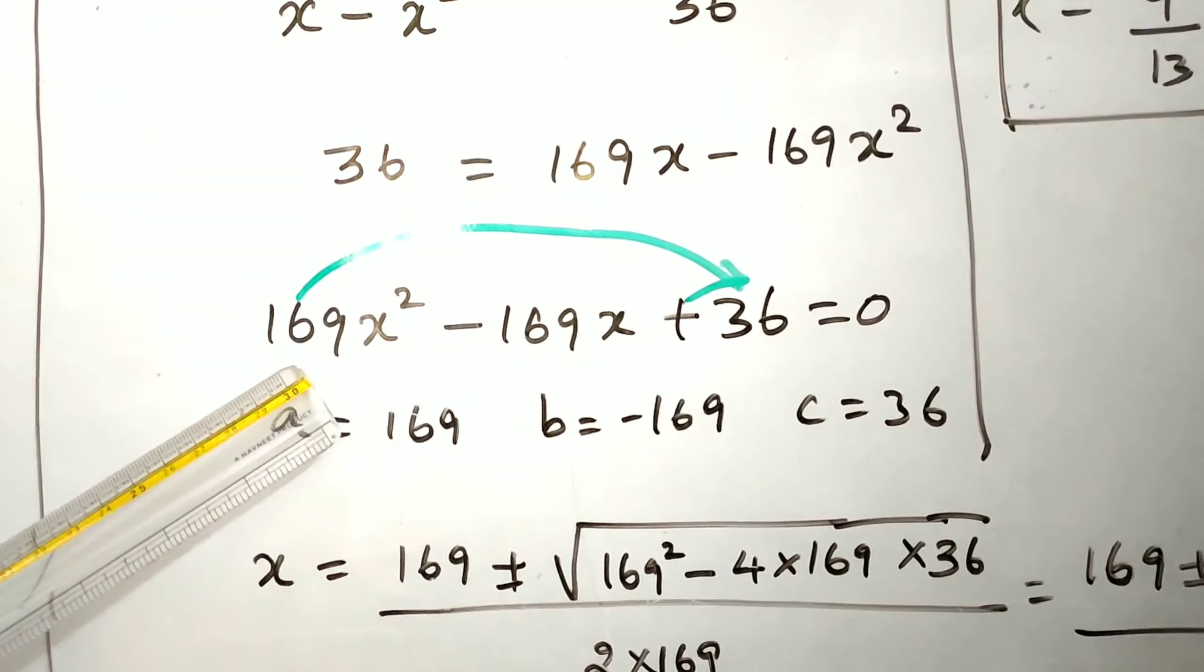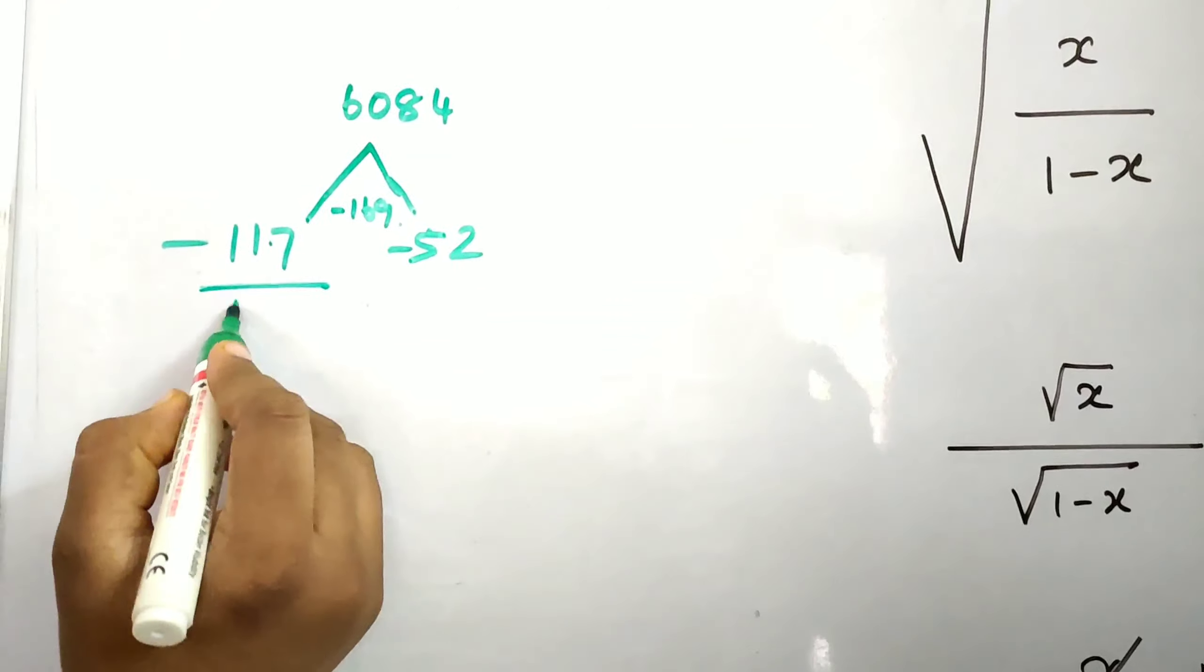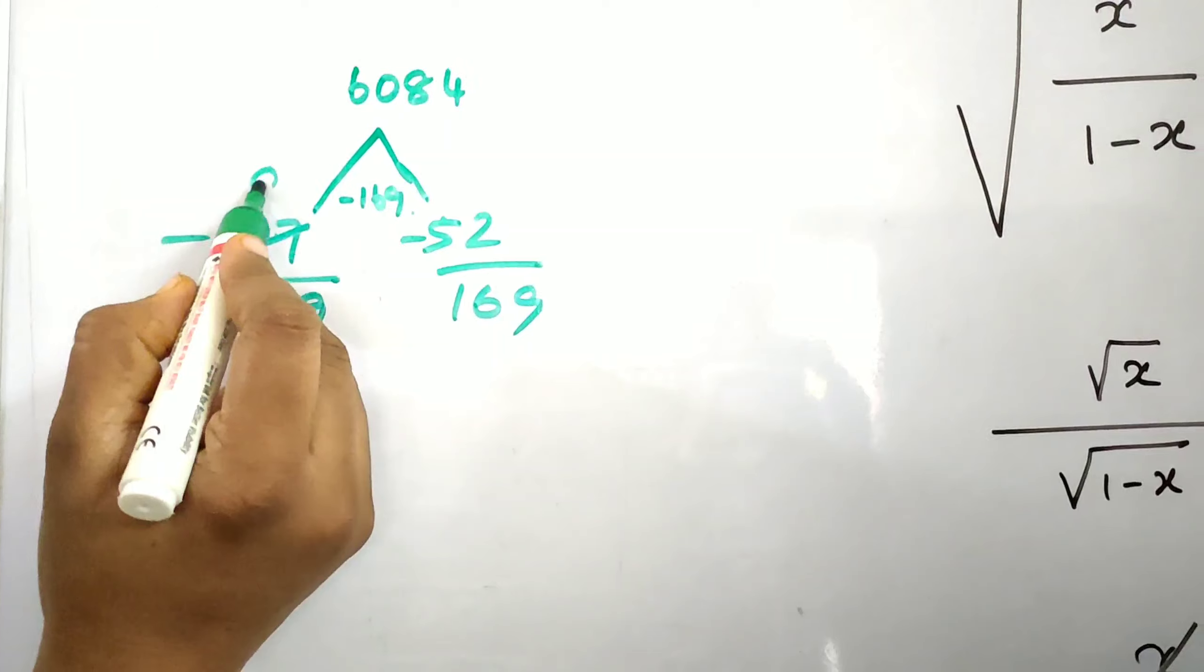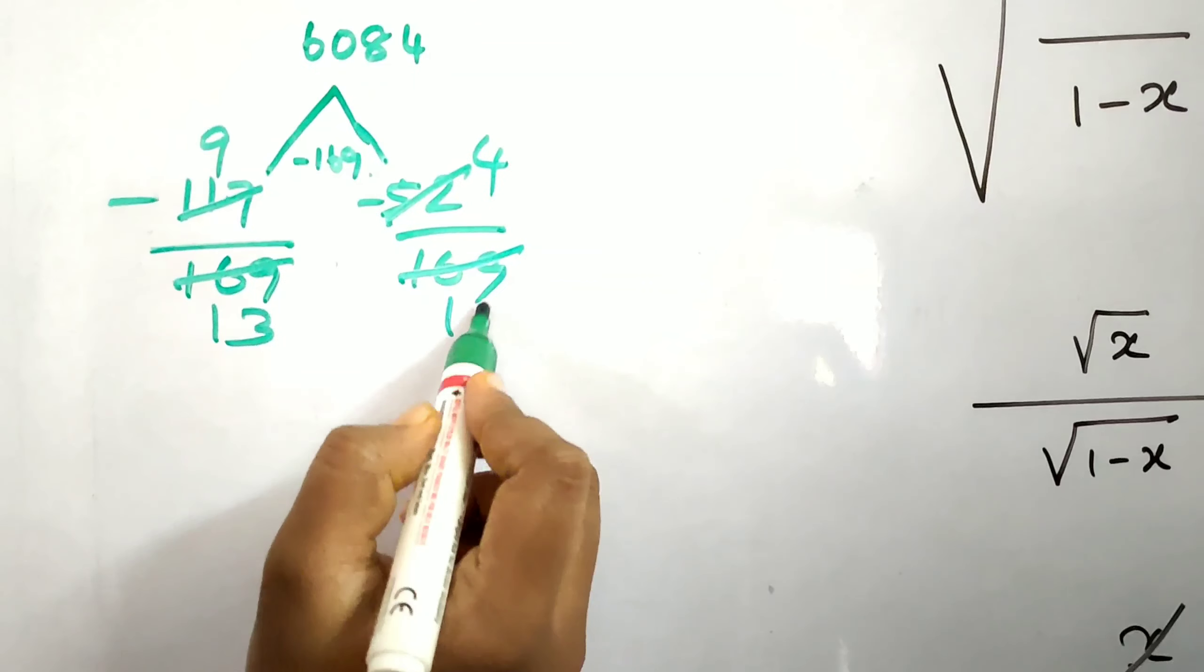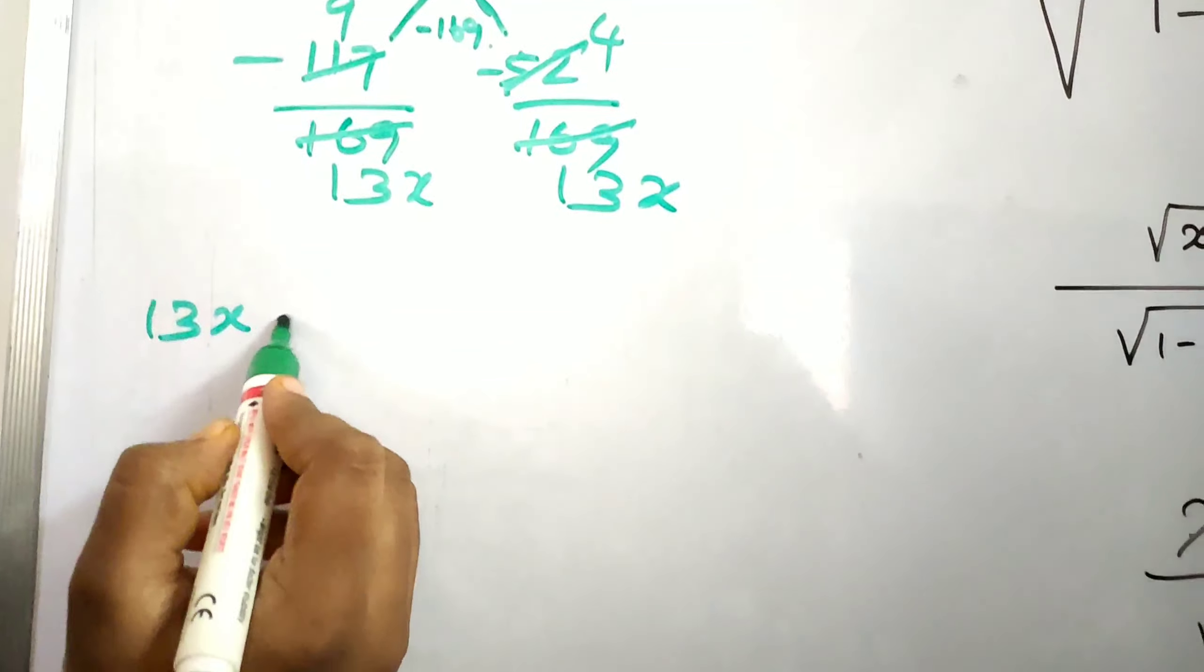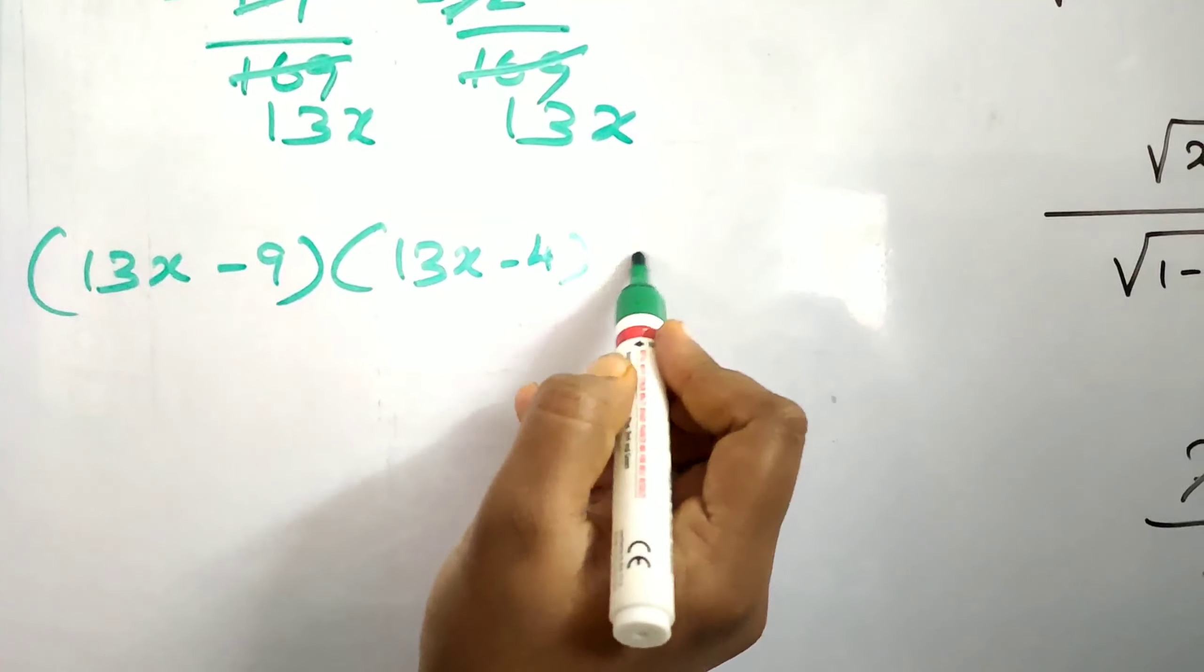The coefficient of x squared is 169. Divide by 169. This is 9 times, this is 13 times, this is 4 times, this is 13 times. Add x: 13x minus 9 times 13x minus 4 equals 0.